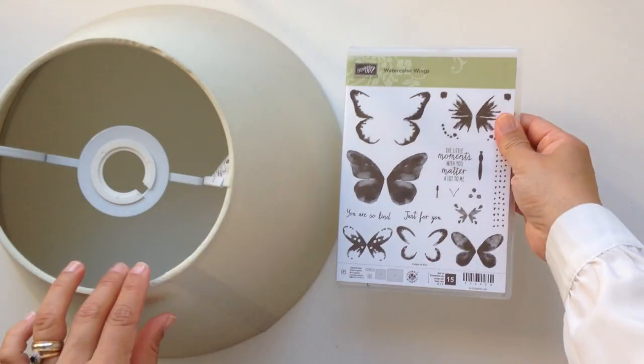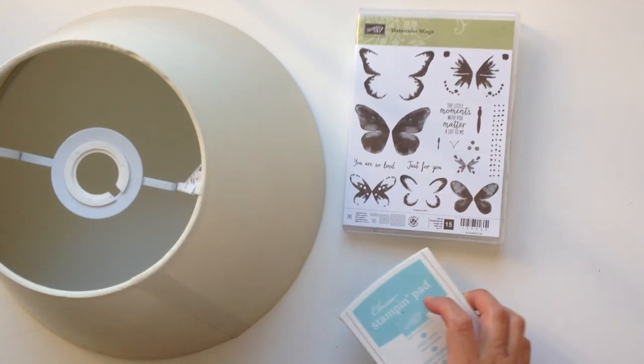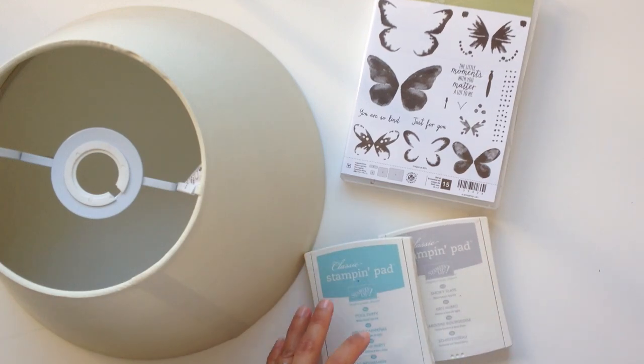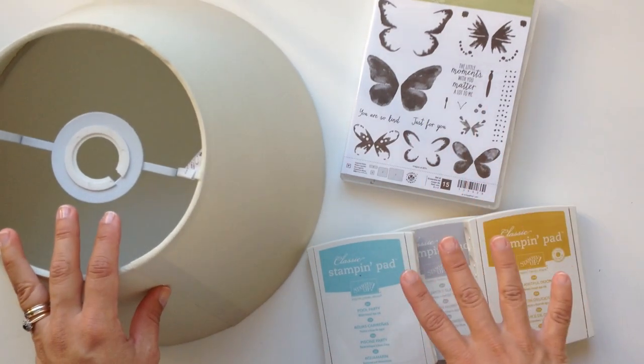I'm going to use this set called Watercolor Wings. It has 15 clear stamps, and I'm also going to use three different colors of ink: Pool Party, Smoky Slate, and Delightful Dijon.